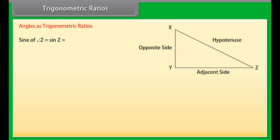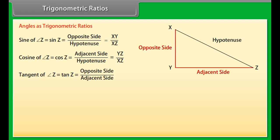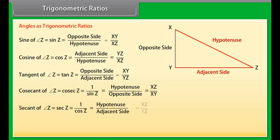Let us now express different measures of angle Z as ratios of the sides of triangle XYZ. Sine of angle Z equals opposite side upon hypotenuse. Cosine of angle Z equals adjacent side upon hypotenuse. Tangent of angle Z equals opposite side upon adjacent side. Cosecant of angle Z equals 1 upon sin Z, which equals hypotenuse upon opposite side. Secant of angle Z equals 1 upon cos Z, which equals hypotenuse upon adjacent side. Cotangent of angle Z equals 1 upon tan Z, which equals adjacent side upon opposite side.